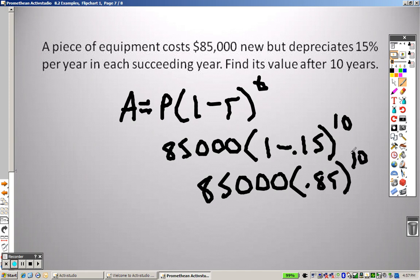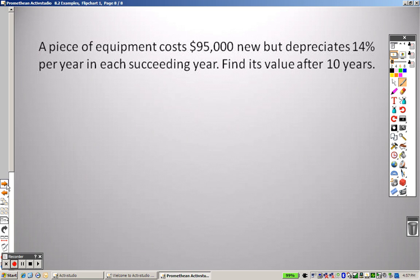So 85,000 times 0.85 to the 10th power, and we end up getting $16,734.32. So that piece of equipment was $85,000. Now it's only worth $16,734.